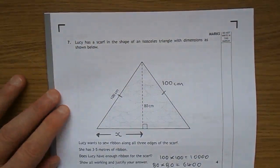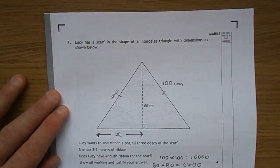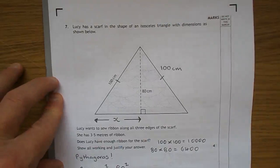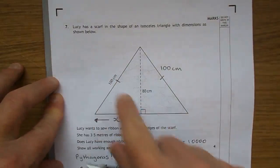And here we have the SQA 2015 National 5 Life Skills Mathematics, paper 1, and we're tackling question 7. Lucy has a scarf in the shape of an isosceles triangle with dimensions as shown below.